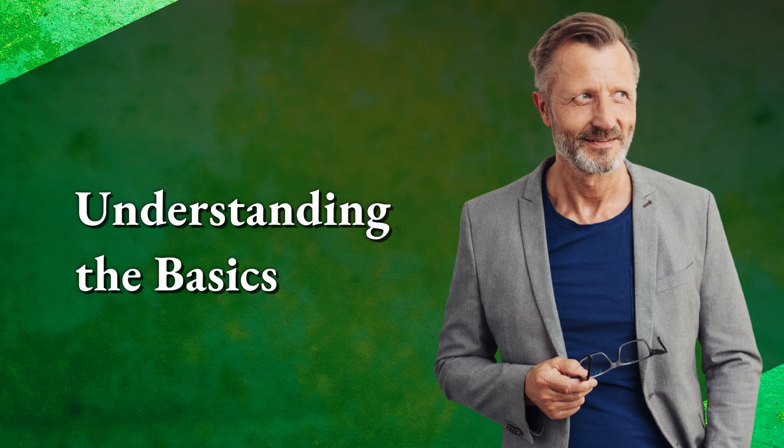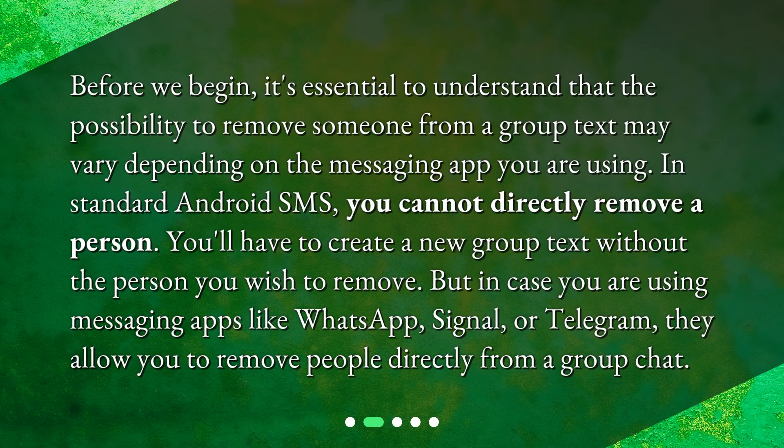Understanding the basics. Before we begin, it's essential to understand that the possibility to remove someone from a group text may vary depending on the messaging app you are using. In standard Android SMS, you cannot directly remove a person — you'll have to create a new group text without the person you wish to remove. But if you are using messaging apps like WhatsApp, Signal, or Telegram, they allow you to remove people directly from a group chat.